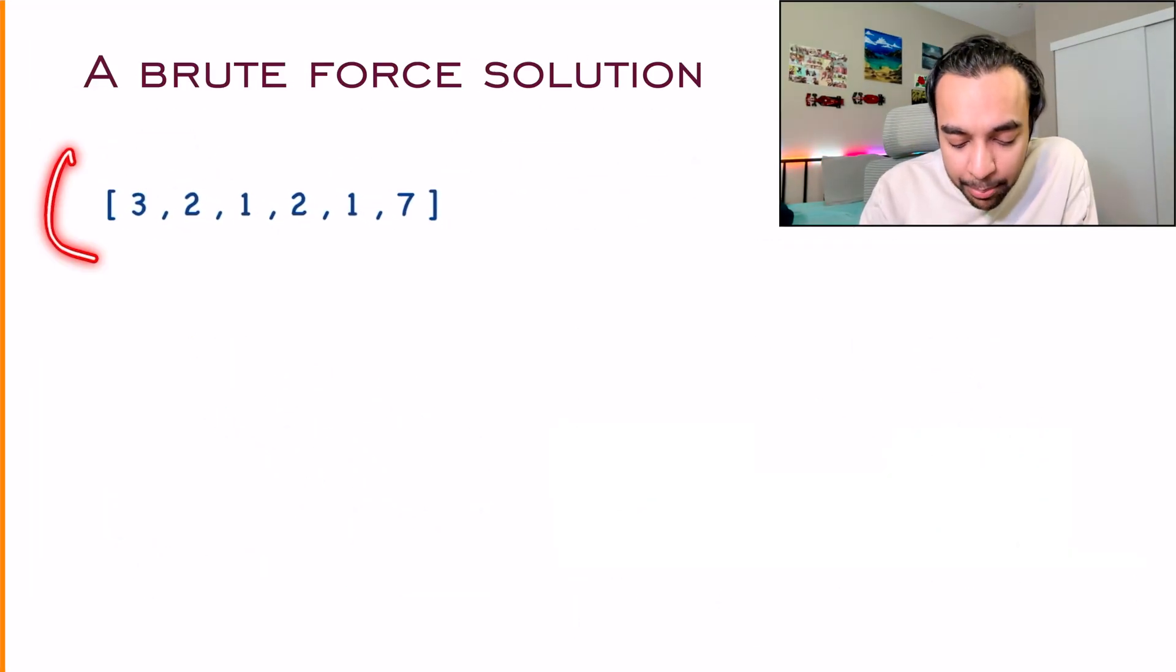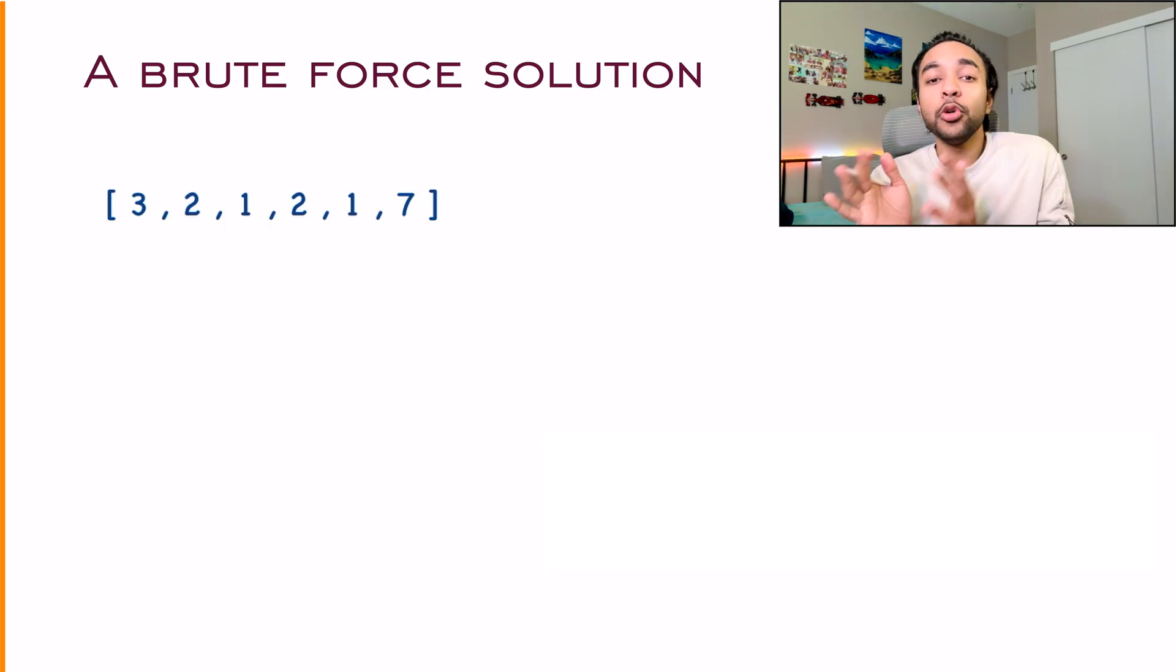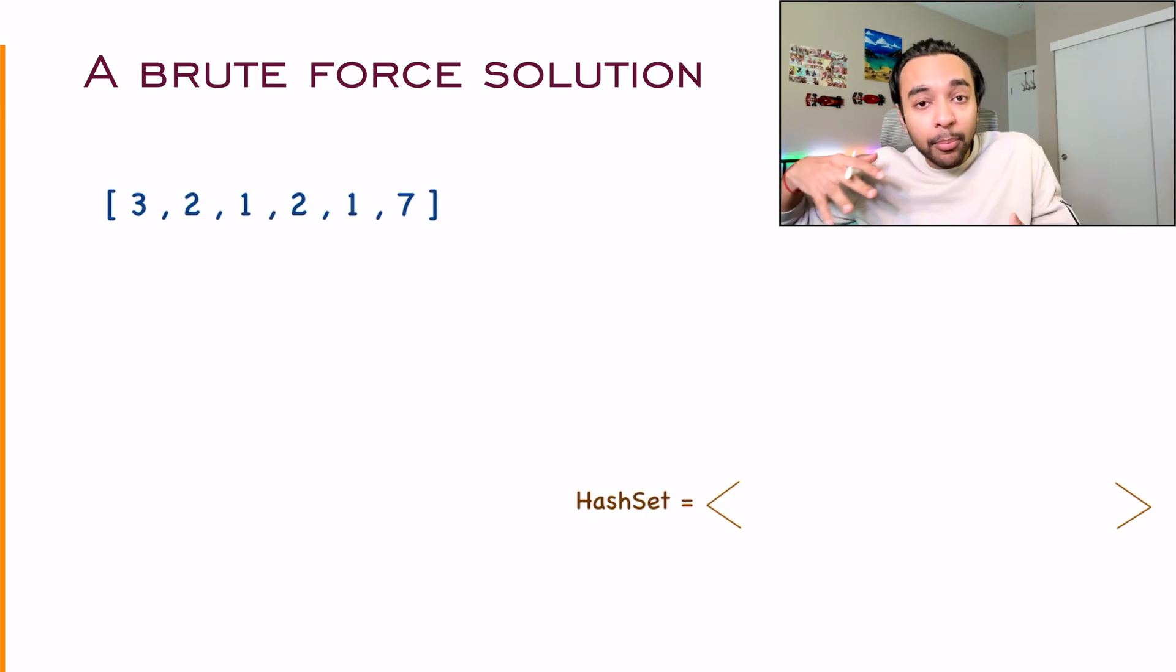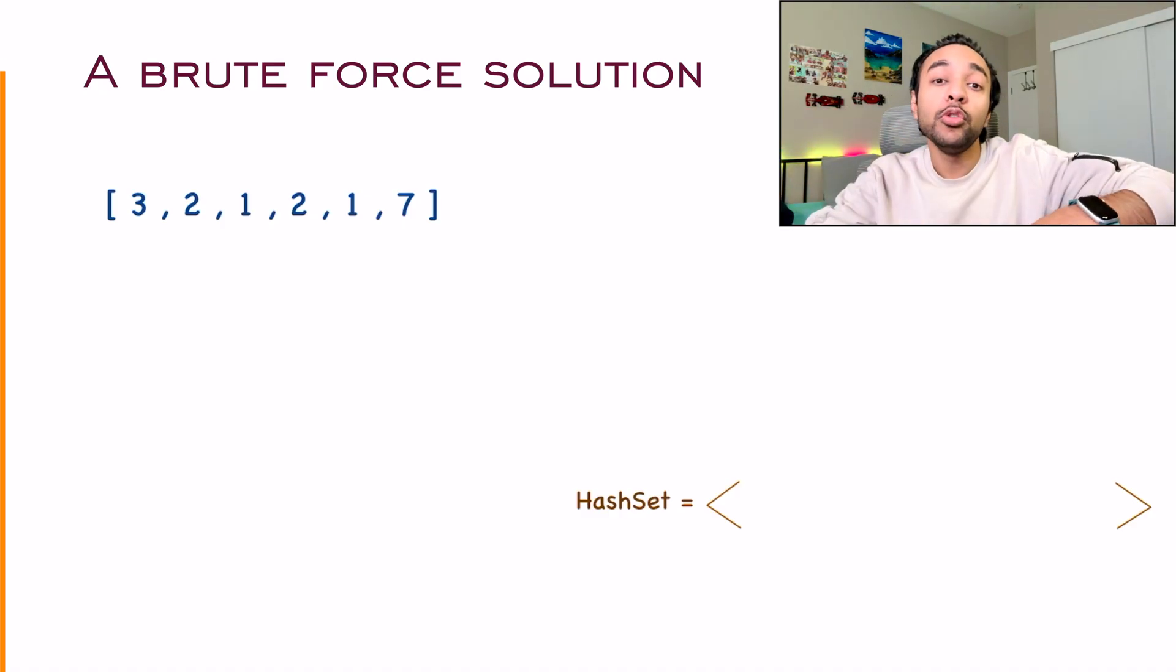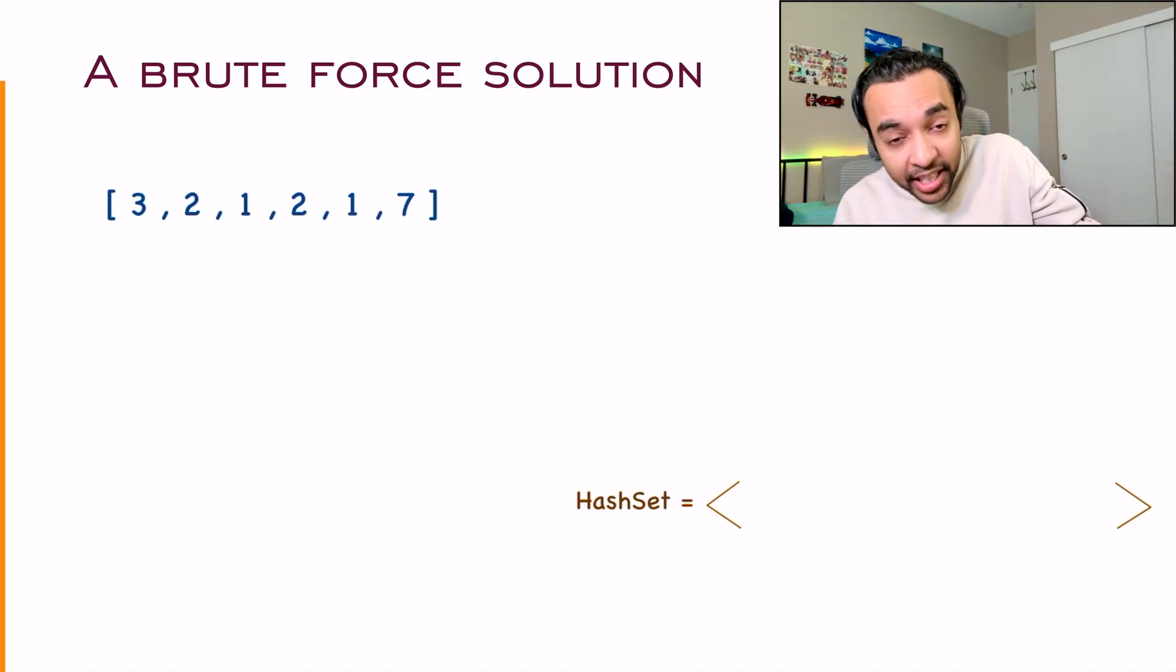Let's say you have the sample test case and you approach this problem. What's the most naive way or brute force method by which you can find a solution? One thing you can do is start to traverse this array from the beginning and add all your items to a hash set, because a hash set can quickly determine if a number is duplicated or not.